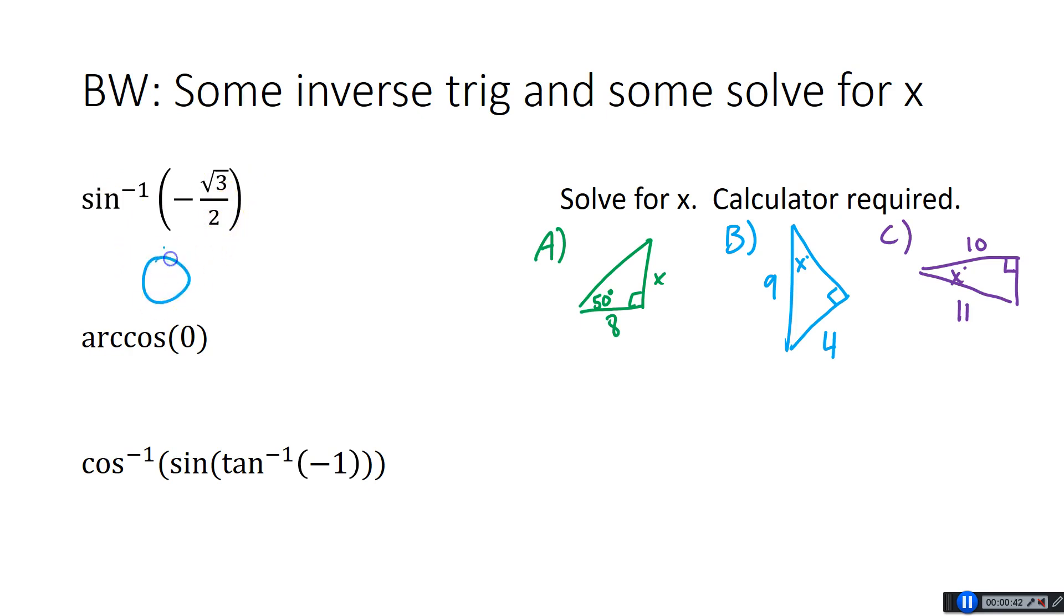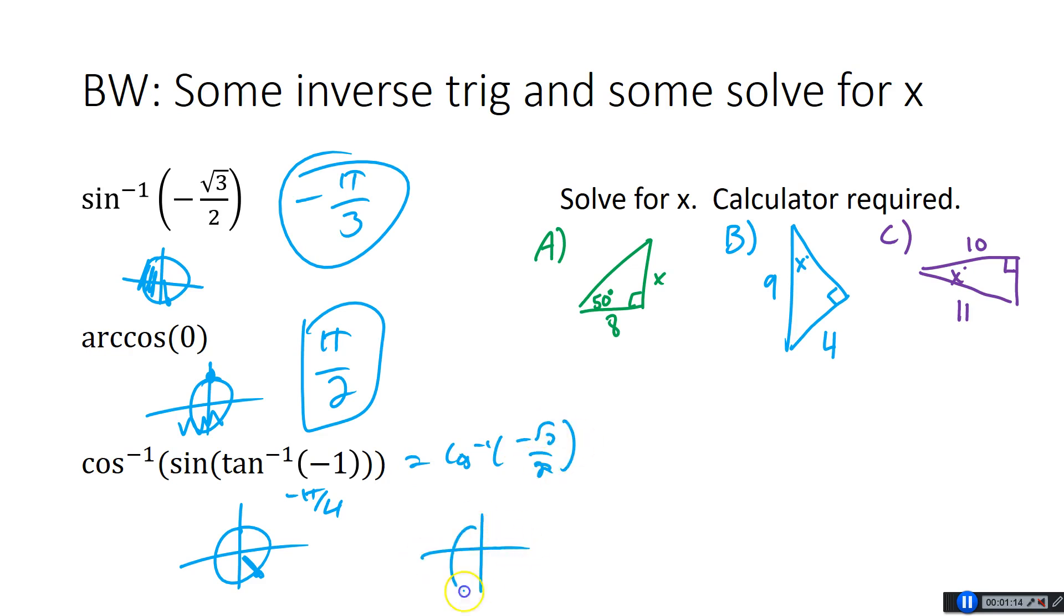So let's take a look. So sine inverse of negative root 3 over 2. So our sine inverse uses the right side of the circle. Negative root 3 over 2 is down here. That's negative pi over 3. Our cosine inverse of 0. So we're asking, when is cosine 0 on the top? Cosine is 0 right at the top of the circle. That's pi over 2. Now let's see here. Tan inverse of negative 1. Tan inverse of negative 1 is right here. So this is going to be negative pi over 4.